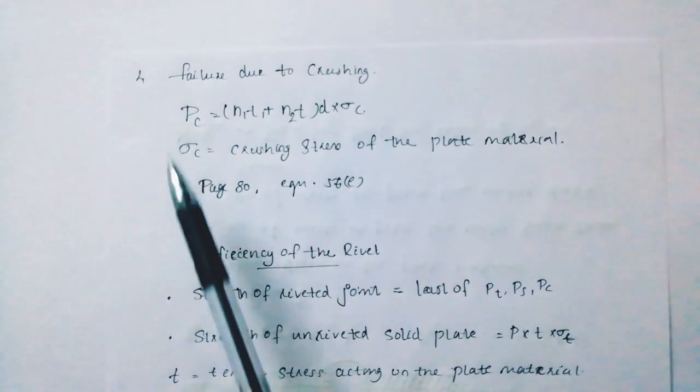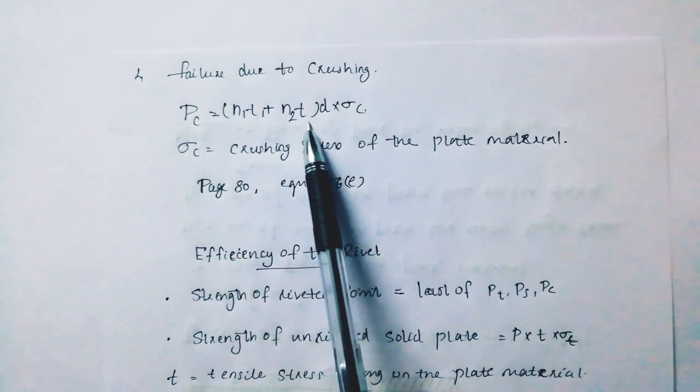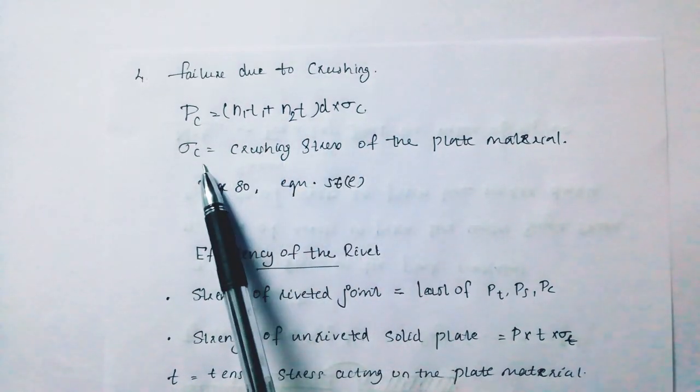Next, failure due to crushing: PC equals N1 times T1 plus N2 times TD times sigma C, where sigma C is the crushing stress of the plate material.